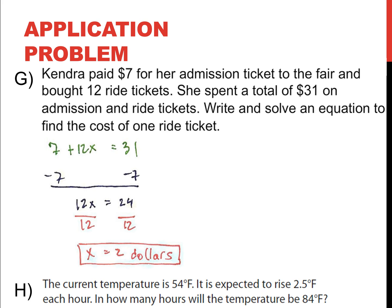So, go ahead and pause the video after I read problem H. Go ahead and do it. It's the exact same way that we solved example G. So, for example H, the current temperature is 54 degrees Fahrenheit. It's expected to rise 2.5 degrees Fahrenheit each hour. So, in how many hours will the temperature be 84 degrees Fahrenheit? Pause the video. Solve that equation. I'll be here when you get back.